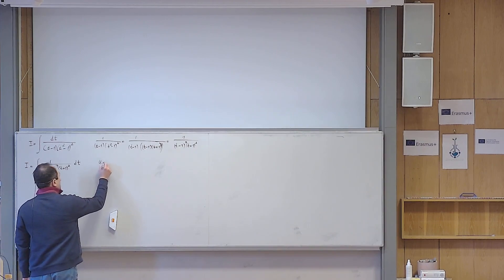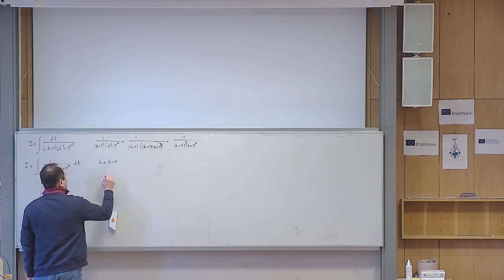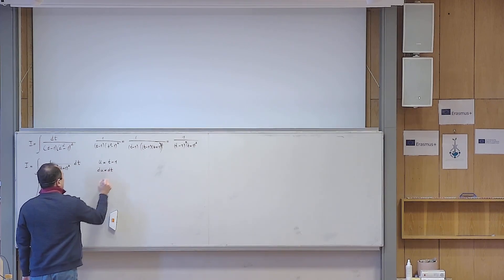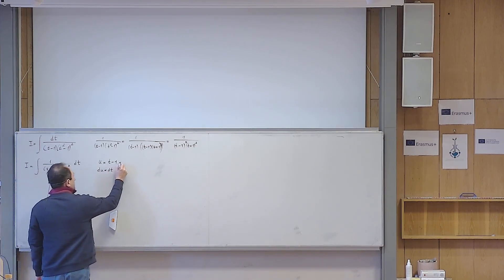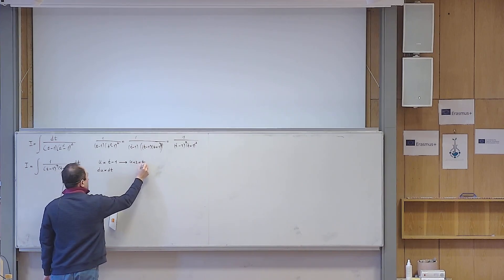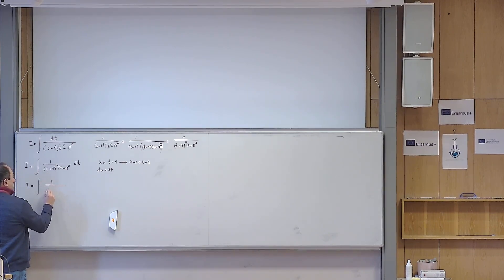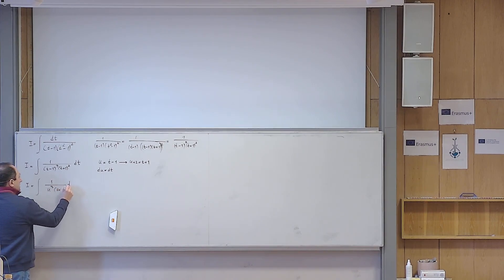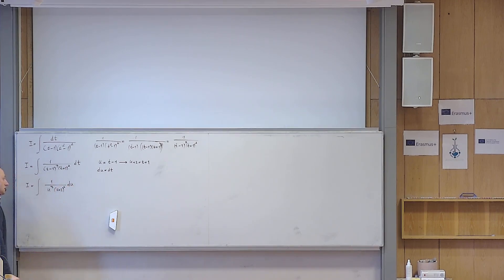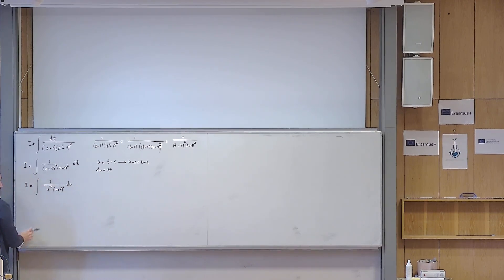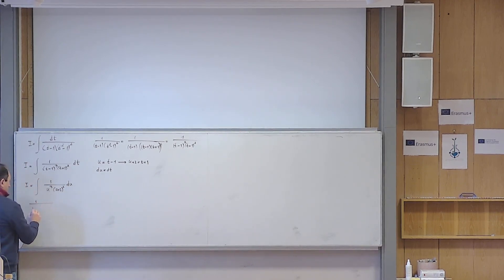This motivates me to introduce u = t minus 1, so du = dt. I also need t plus 1, which equals u plus 2. Replacing everything, the integral becomes the integral of 1 over u cubed times (u plus 2) squared, du. By this substitution I was able to get rid of raising a polynomial to power 3, and now I decompose 1 over u cubed (u plus 2) squared into partial fractions.